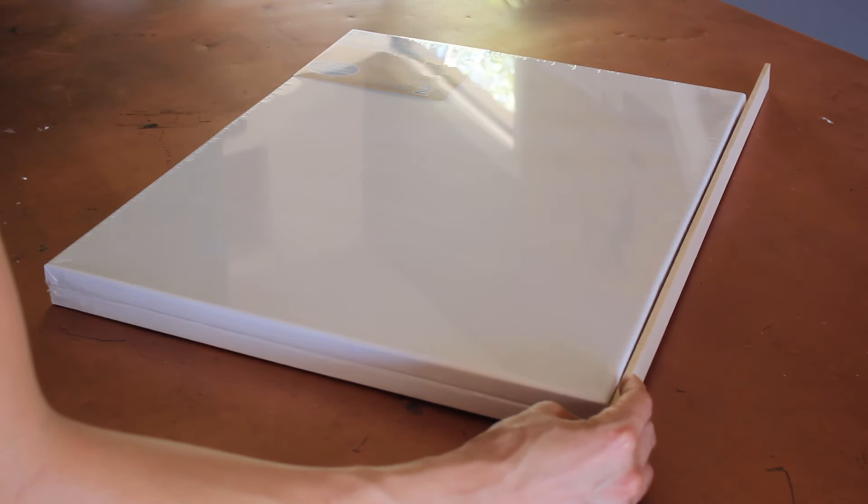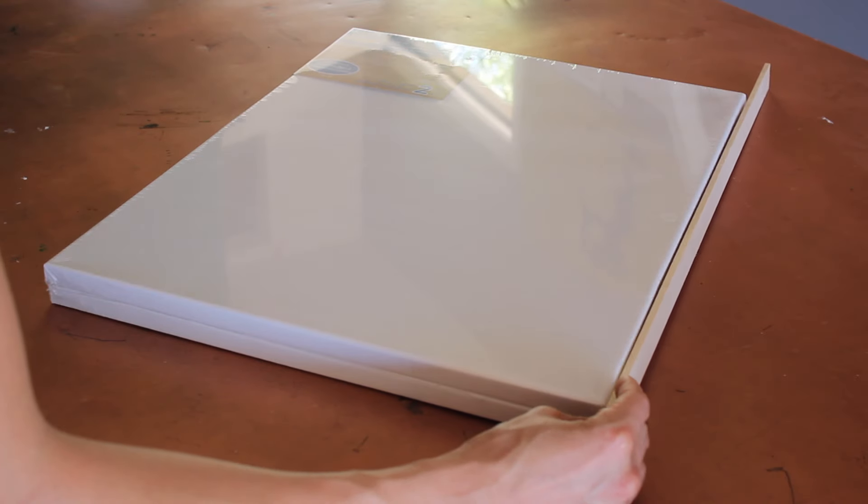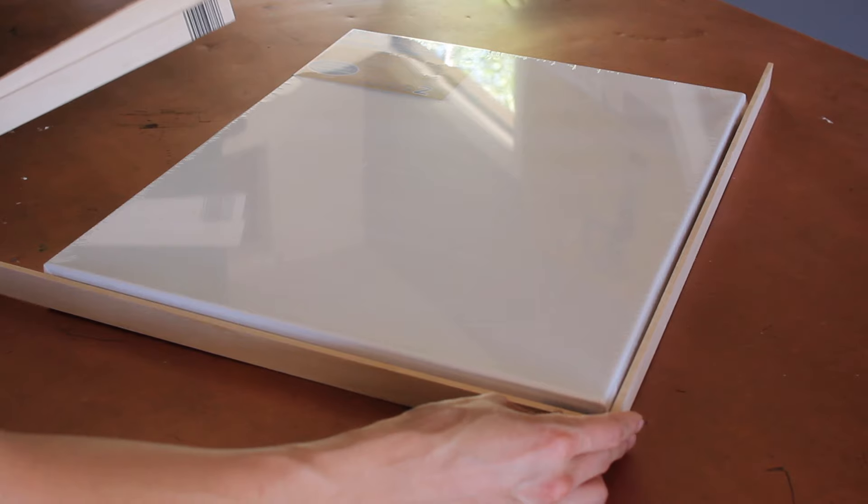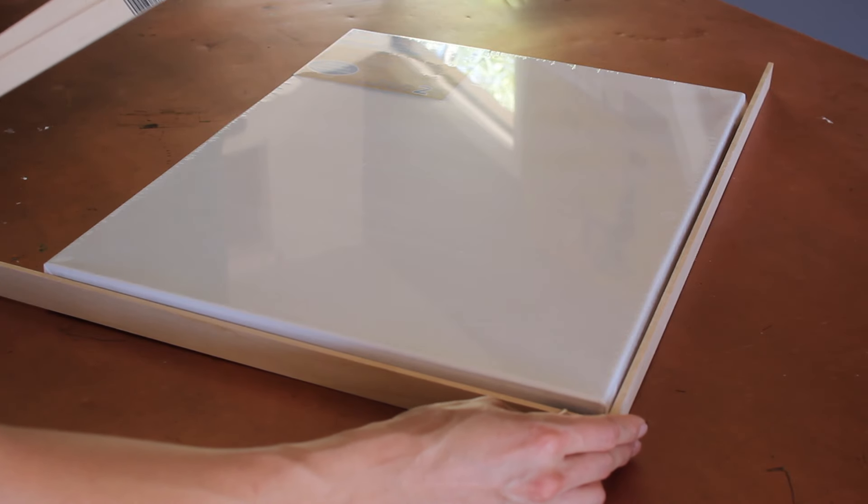So while that dries I just went ahead and took my four thinner pieces of wood and measured them around the canvas. And yes I still have the plastic on because knowing me I will always spill something on a canvas when I'm using it.